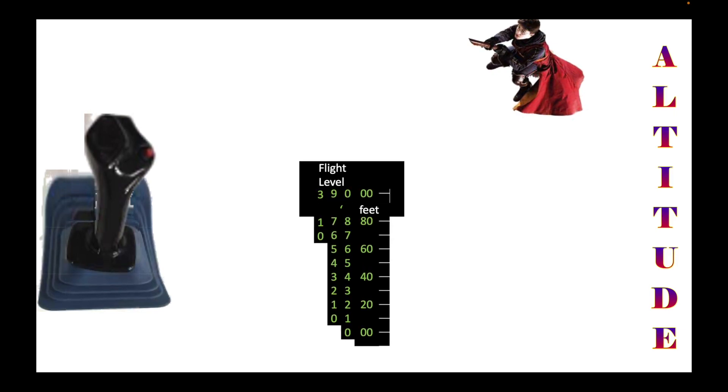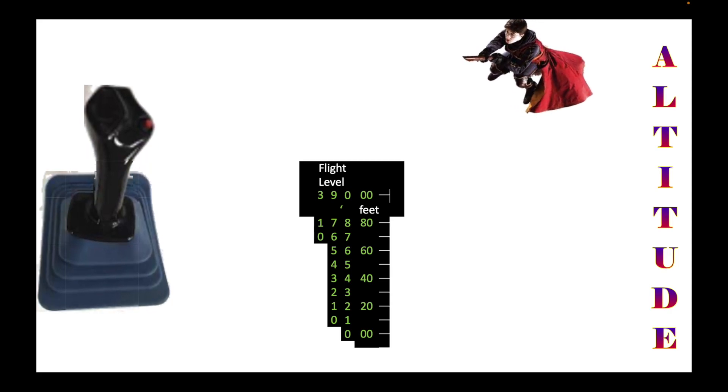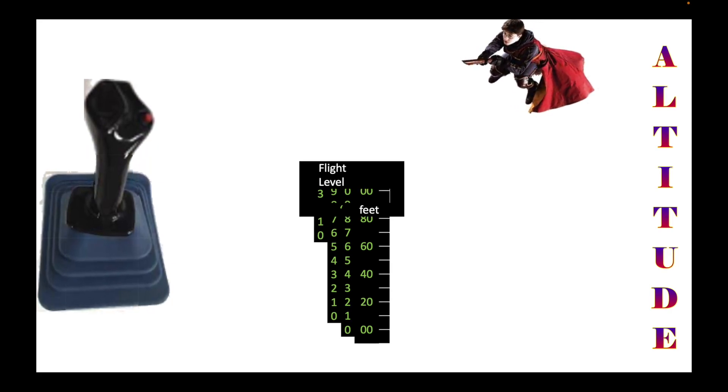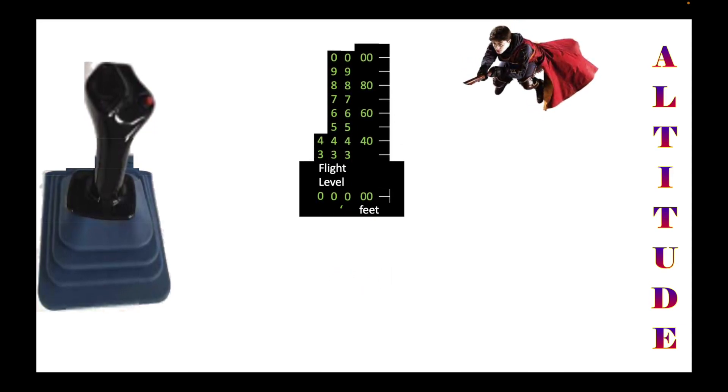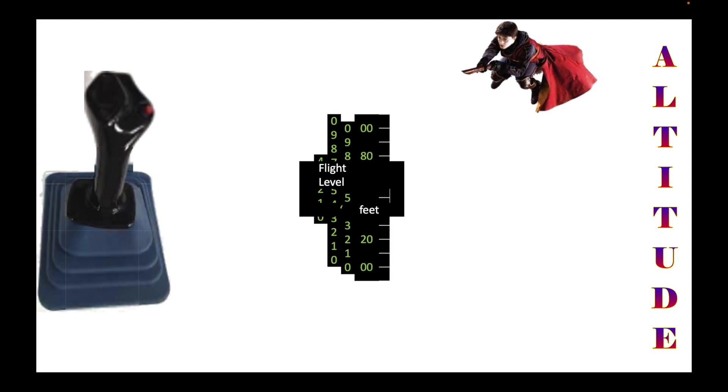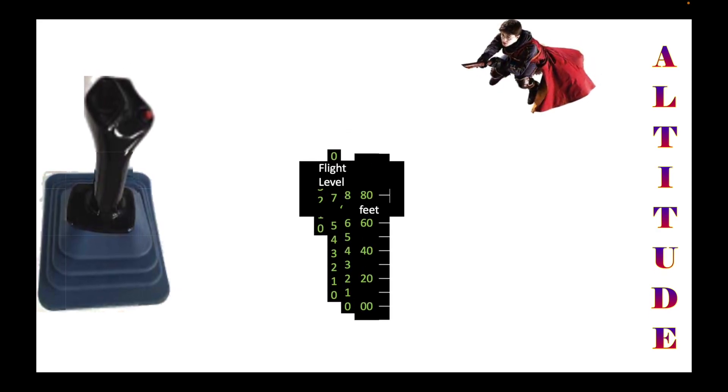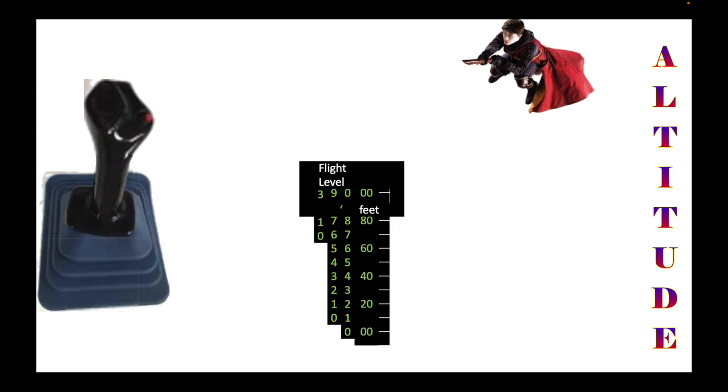When the joystick is pulled backward the airplane would go up, but when the joystick is pushed forward the airplane would go down in flight level. The altitude is measured in thousands of feet. To compute for the flight level, you divide the altitude in feet by a hundred. The maximum altitude for an Airbus 320 plane is 39,000 feet. This is equivalent to flight level 390.